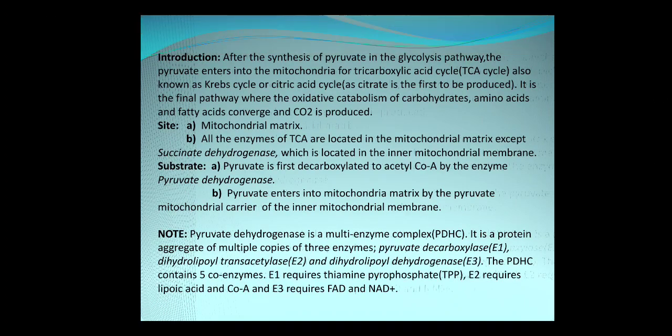Introduction: after the synthesis of pyruvate in the glycolysis pathway, the pyruvate enters into the mitochondria for the tricarboxylic acid, that is TCA cycle, which is also known as Krebs cycle or citric acid cycle. It is called citric acid cycle because the first stable product formed in the TCA cycle is citrate. It is the final pathway where the oxidative catabolism of carbohydrate, amino acid, and fatty acids converge to produce carbon dioxide.